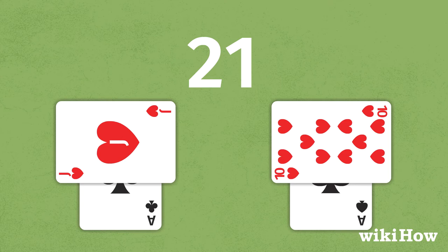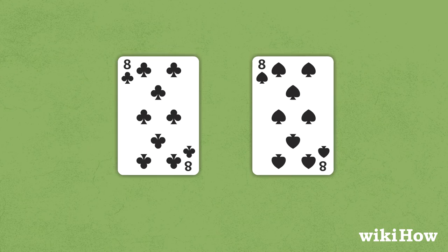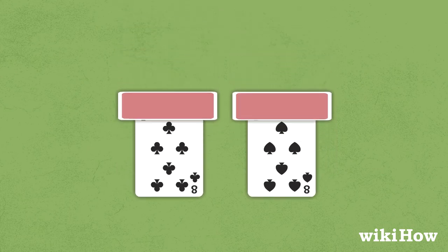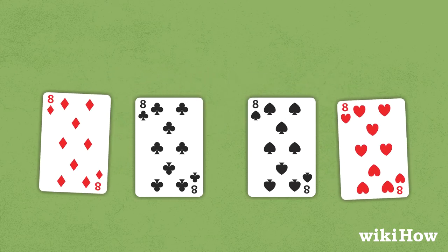You'll also get a much better chance at a good hand if you split a pair of 8s. If you happen to get a second pair of aces or 8s, take the opportunity to triple your bet and split again.